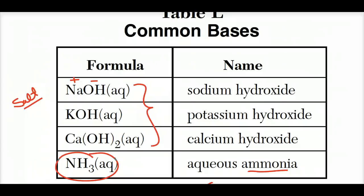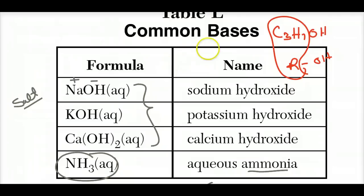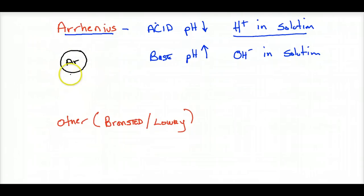If you see a formula like C₃H₇OH, that's a hydrocarbon chain with an OH — it's an alcohol, not a base. Table R shows ROH where R is the rest of the organic molecule. Acids and bases are electrolytes. Ammonia is not an Arrhenius base because it doesn't have a hydroxide in it, yet it still somehow changes the hydroxide concentration. Arrhenius is the easiest and most limited definition — acids make H⁺, bases have OH⁻ in the compound.